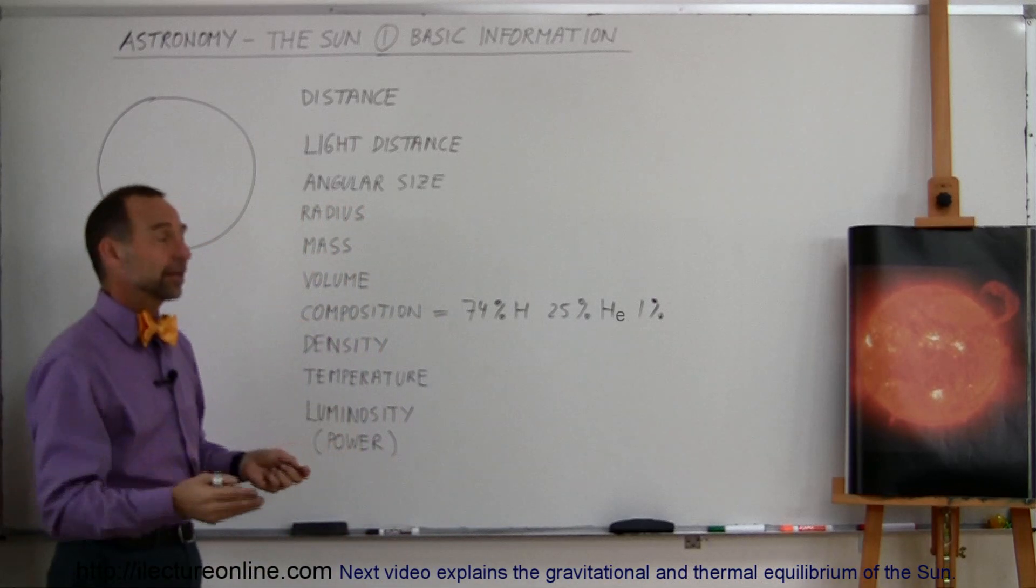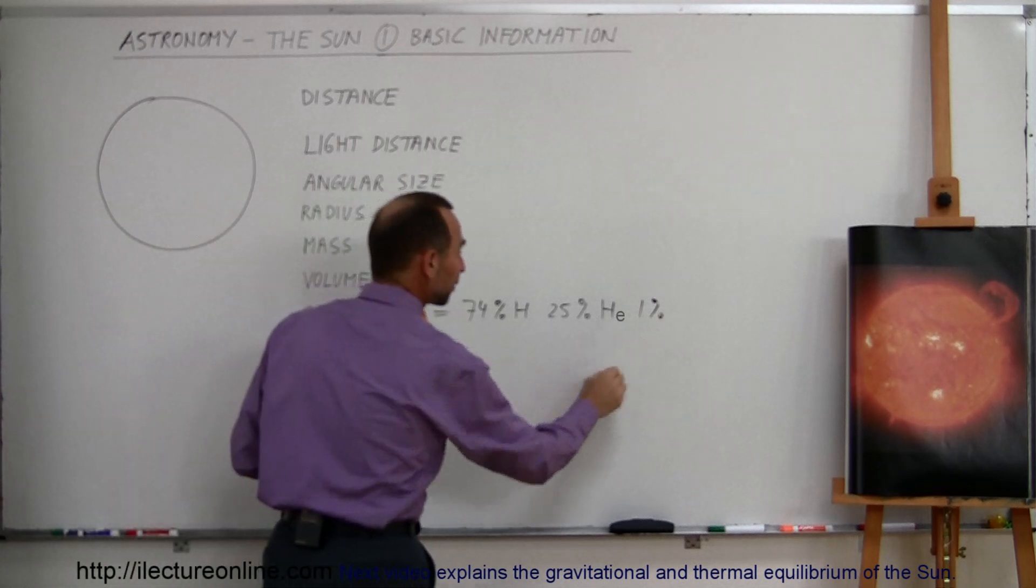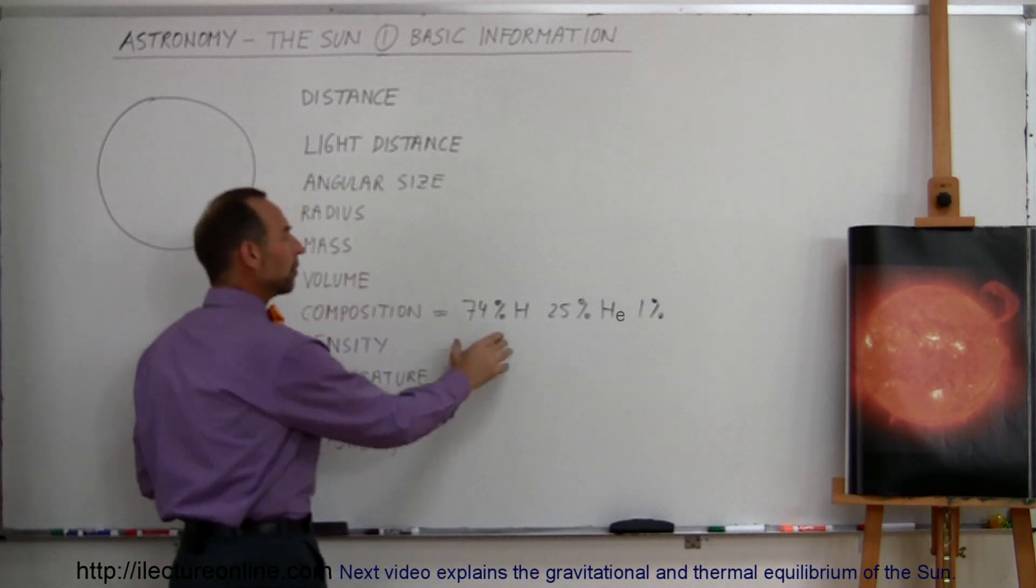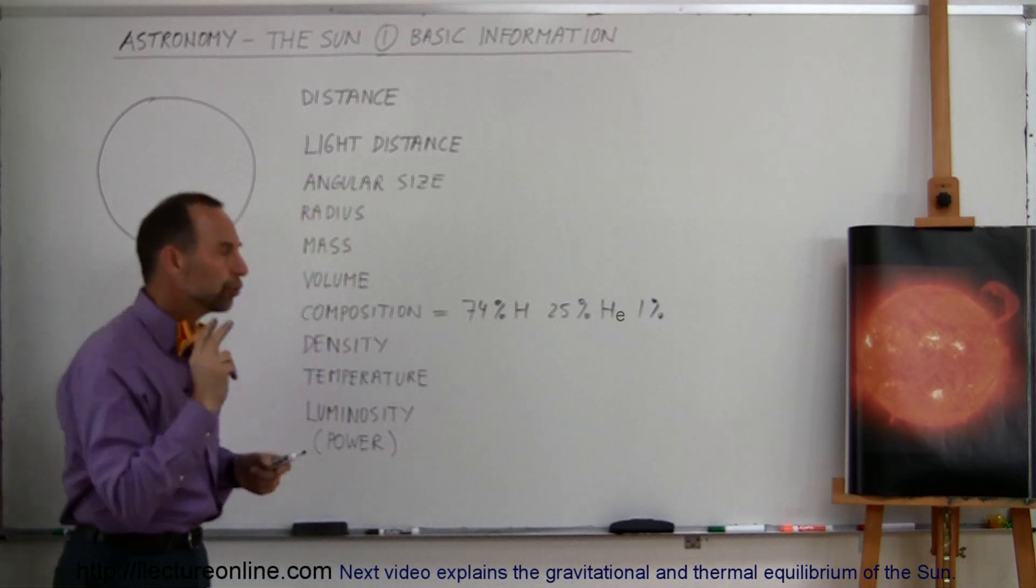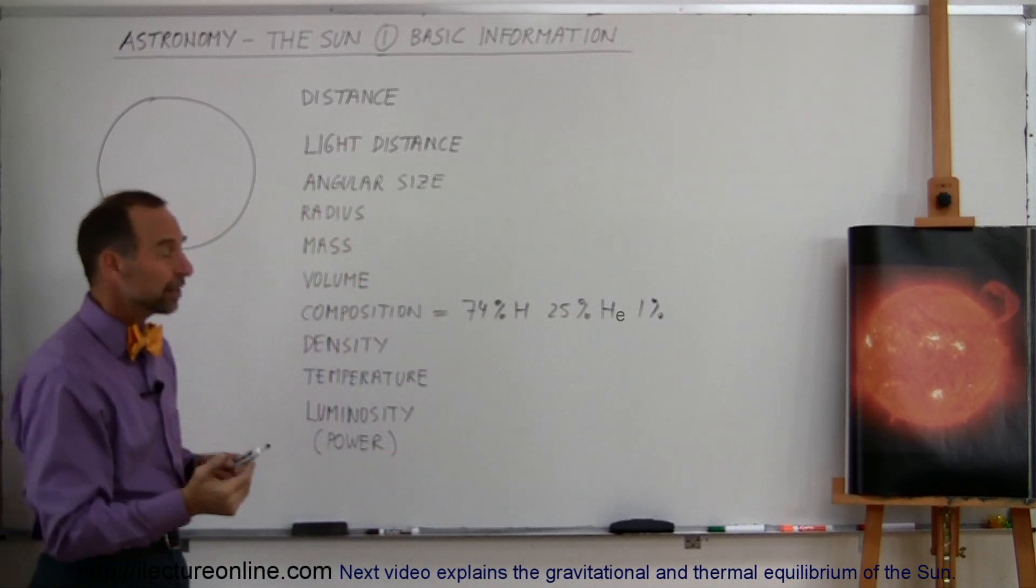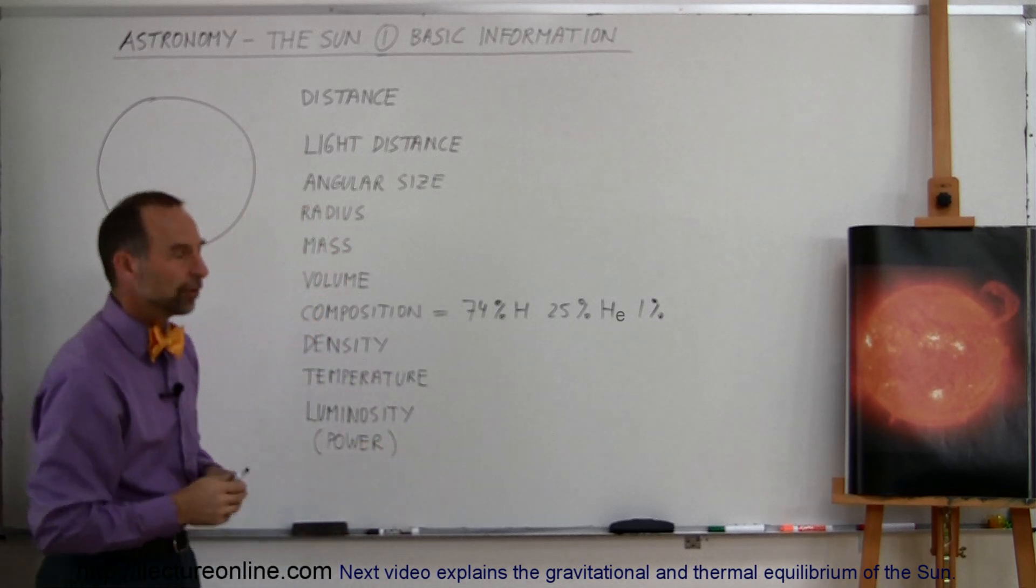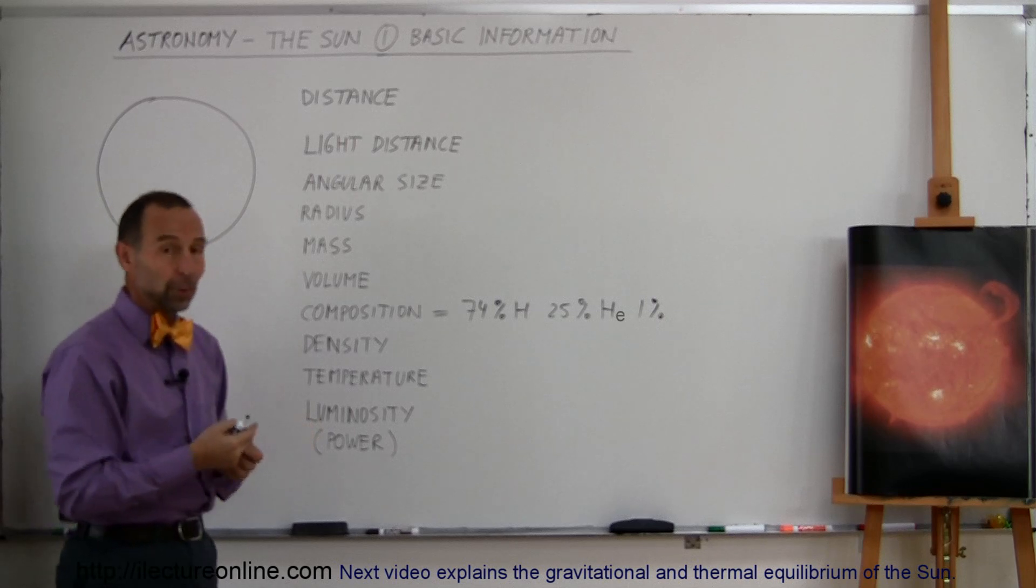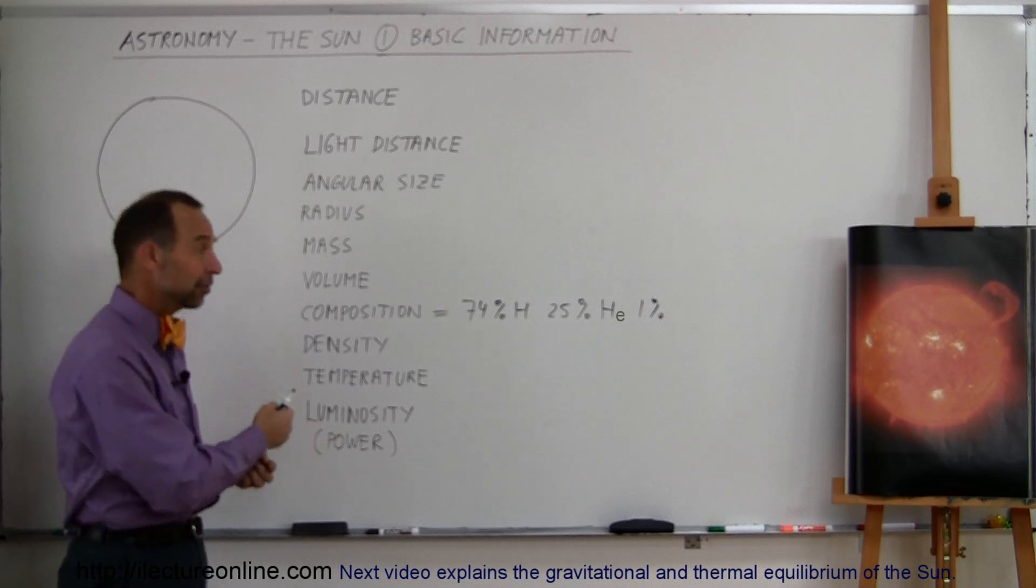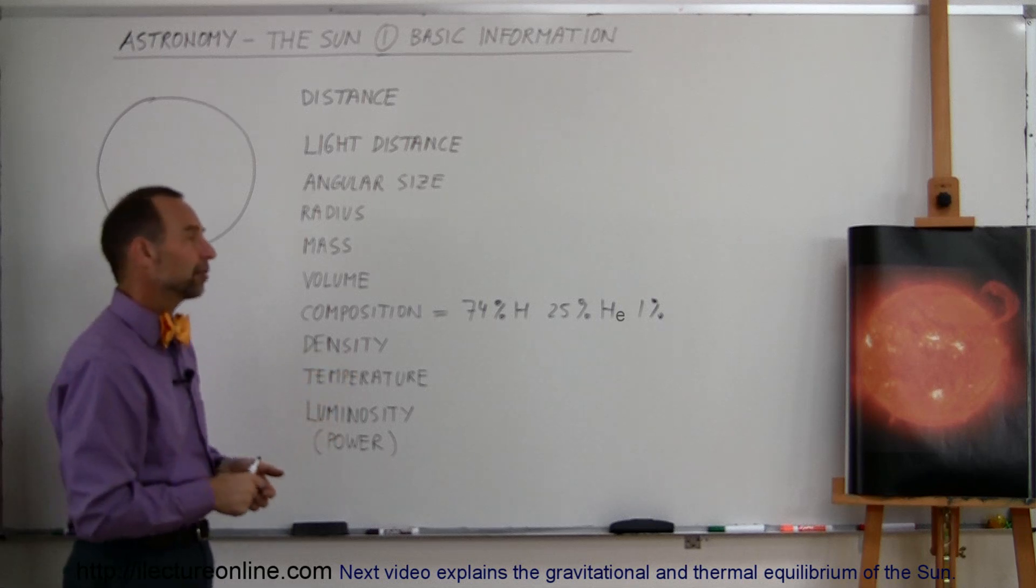Yes, we do find everything on the periodic table inside the Sun at some level of density, but primarily 99% of that star is composed of two different gases, hydrogen and helium, and of those two, about three-quarters is hydrogen. Hydrogen is the most abundant element in the universe. Matter of fact, about three-quarters of the whole universe is made out of hydrogen, so it's no wonder that stars are made three-quarters out of hydrogen.